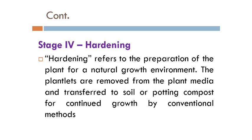Stage 4 is the hardening process. It refers to the preparation of the plant for a natural growth environment. The plantlets are removed from the plant media and transferred to soil or potting compost for continual growth by conventional methods.